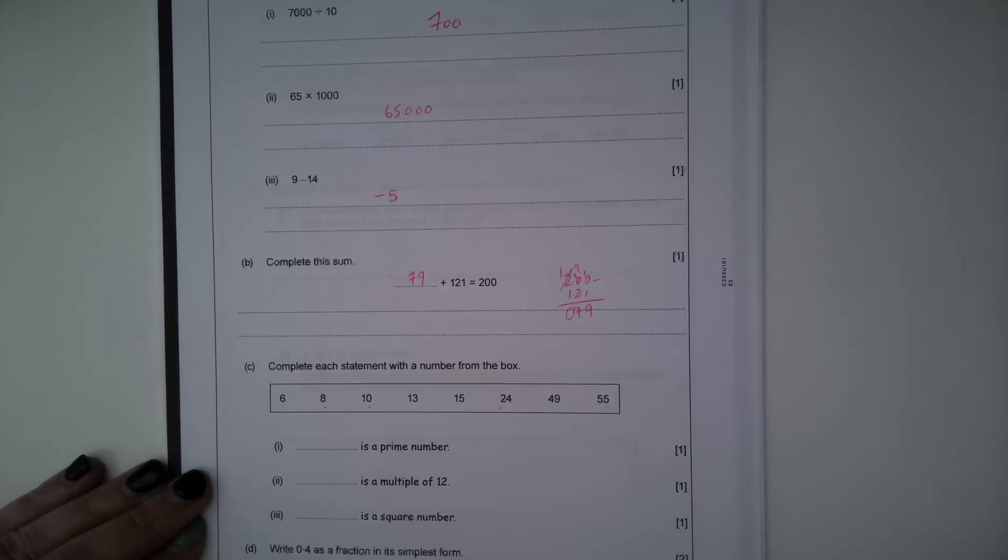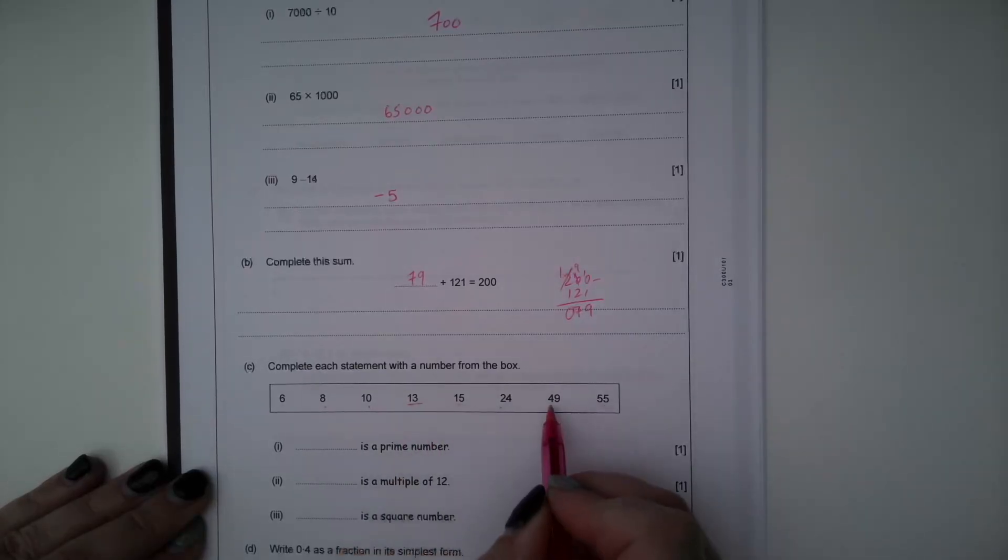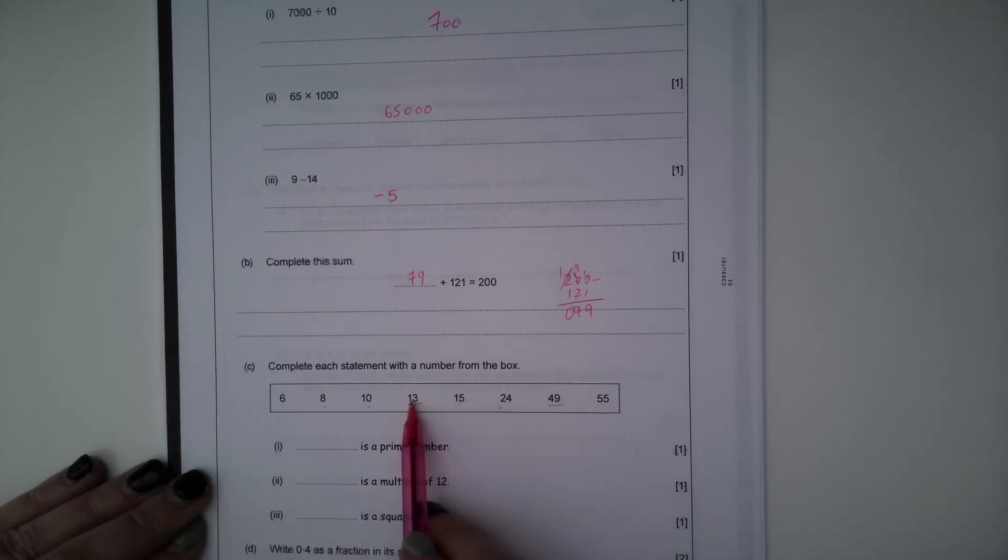We've also got to think about any potential easy spots for multiples of 5, so 15 and 55. So we're choosing between 13 and 49. 49 is in the 7 times tables. 49 is a square number, 7 times 7, so the prime number must be 13.